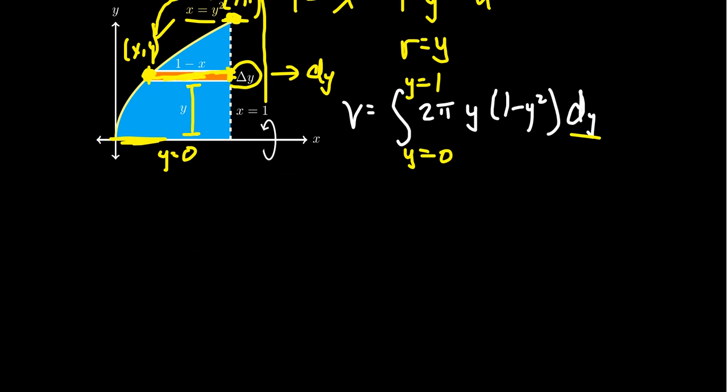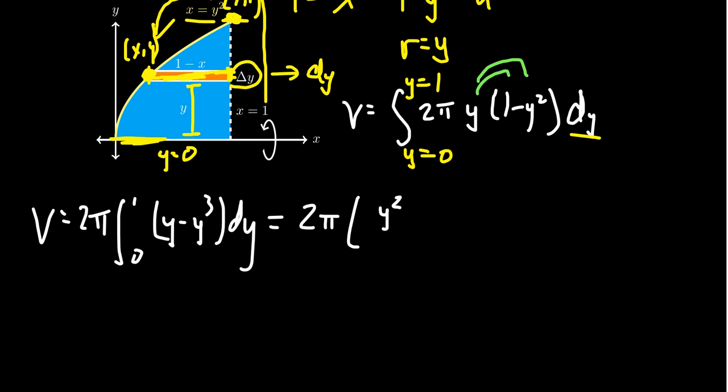Only recommendation, I would say, is distribute the y here. And so the volume would equal 2 pi, the integral from 0 to 1 of y minus y cubed dy. So finding the antiderivative, we're going to get y squared over 2 minus y to the fourth over 4 from 0 to 1.